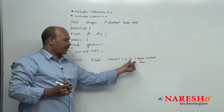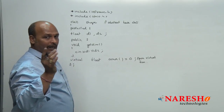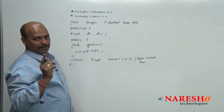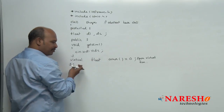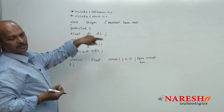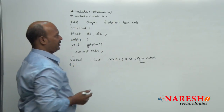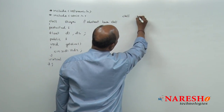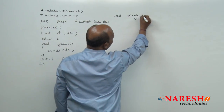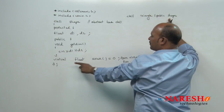Now the abstract base class is created with the pure virtual function. Let us see the derived class — for example, class Triangle derived from public Shape. Shape is the abstract base class because it contains the pure virtual function. From the Shape class I am going to create the Triangle class.